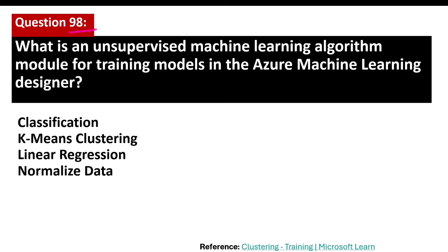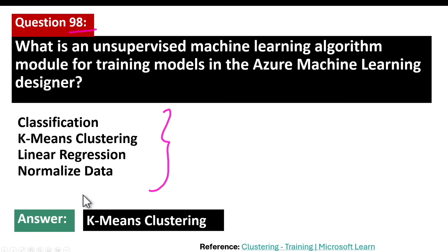Question number 98. What is an unsupervised machine learning algorithm module for training models in the Azure Machine Learning Designer? The correct answer is K-means clustering. K-means clustering is a method used in unsupervised machine learning to divide a set of data points into groups or clusters based on their similarities. Unlike supervised learning where the model is trained with labeled data, K-means clustering works with unlabeled data. The K in K-means stands for the number of clusters you want to create.